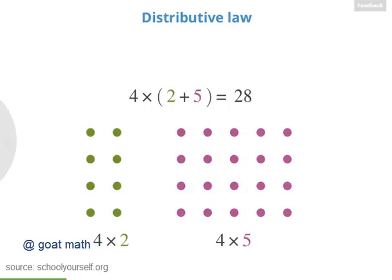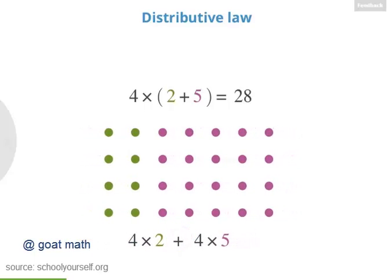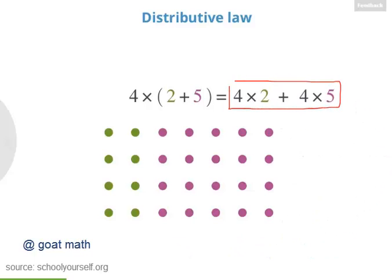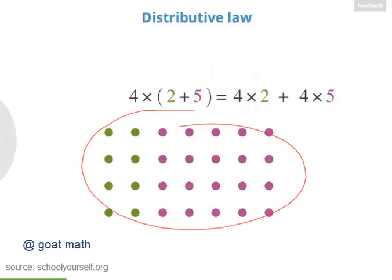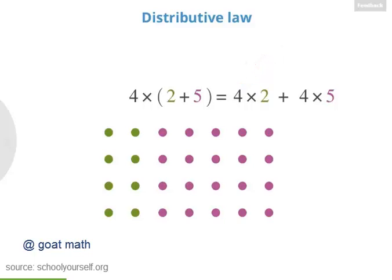That means the total number of dots is 4 times 2 plus 4 times 5. So we've just shown that 4 times (2 plus 5) is equal to 4 times 2 plus 4 times 5. These are two different ways of counting all the dots. Whenever you're adding 2 numbers in parentheses and multiplying that sum by another number, you can use the distributive law — distributing the outside number into the parentheses, multiplying it by each number inside. So we have 4 times 2, and we're adding that to 4 times 5.